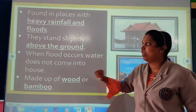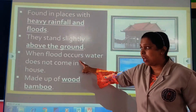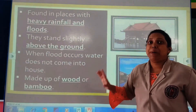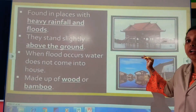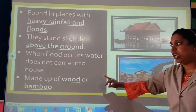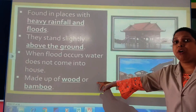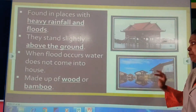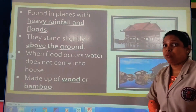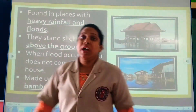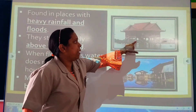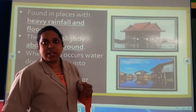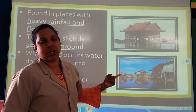Houses are built slightly above the ground. Why? Because when floods occur, water does not come into the house. These houses are made up of wood or bamboo and are known as stilt houses — named after the stilts, the poles on which they stand.